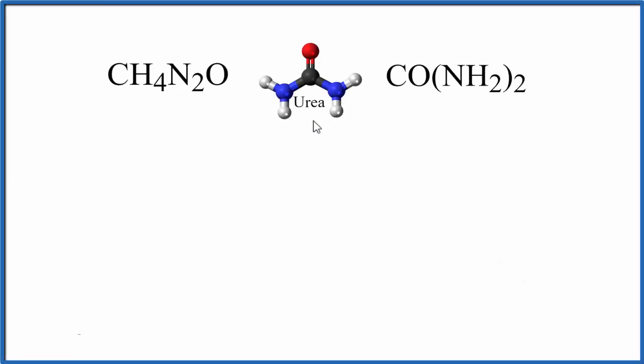In this video, we'll write the Lewis structure for urea, and this is a very important biological compound. It's also used industrially to make fertilizer and as a precursor to many other chemicals.